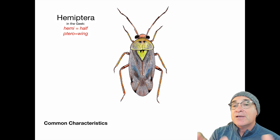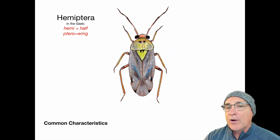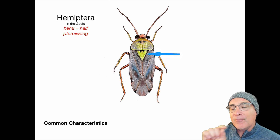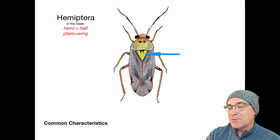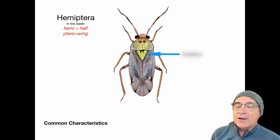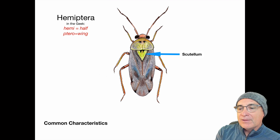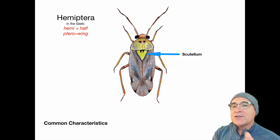What I want to look at is some external features. For instance, the antennae — you'll notice there are four segments in this particular order. Right behind their thorax there's a plate of armor, and on the lygus bug it's decorated with a little yellow or green heart. That's one of their identifying features.